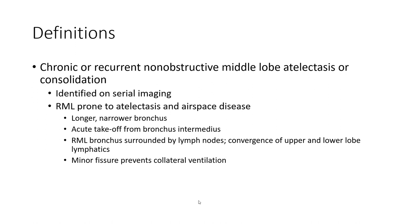Definition: chronic or recurrent non-absorptive middle-lobe atelectasis or consolidation identified on serial imaging. The right middle lobe is prone to atelectasis and airspace disease due to its longer, narrower bronchus and acute take-off from the bronchus intermedius. The right middle-lobe bronchus is surrounded by lymph nodes, and the minor fissure prevents collateral ventilation.